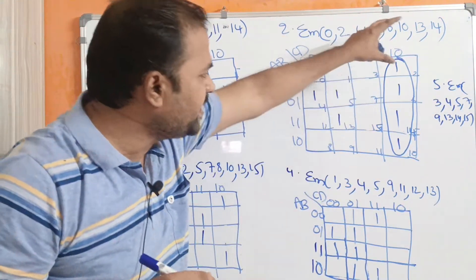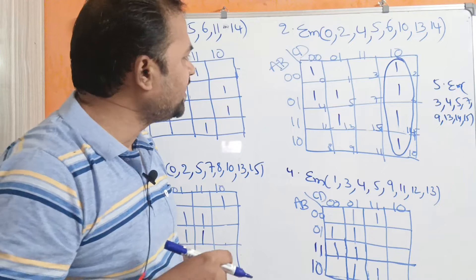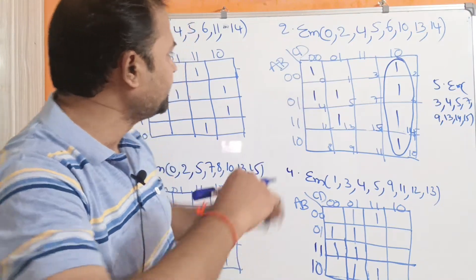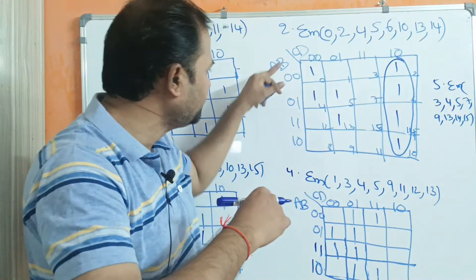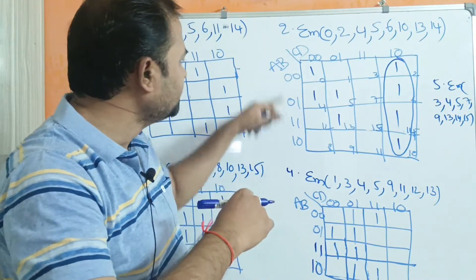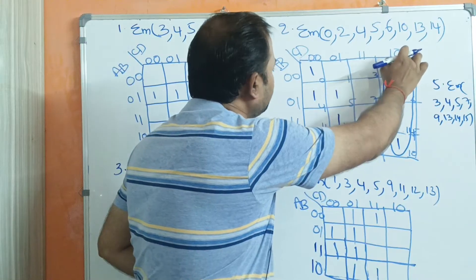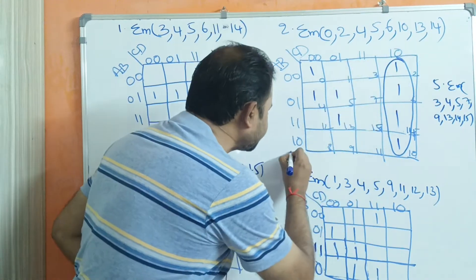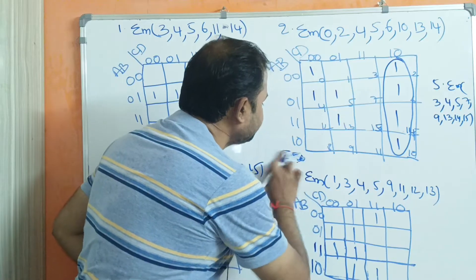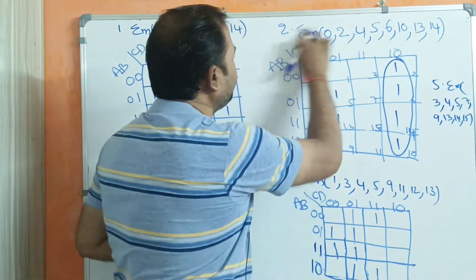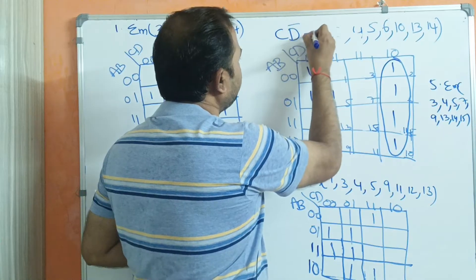We can make all these cells as a group. For this group, the CD values go 0,0 — 0,1 — 1,1 — 1,0, meaning CD is changing, so there is no need to consider that. We only consider the value 1,0 which means CD̅. So the first term is CD̅.